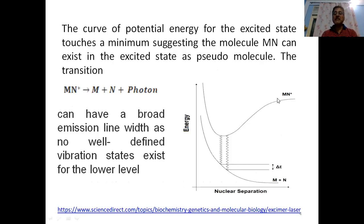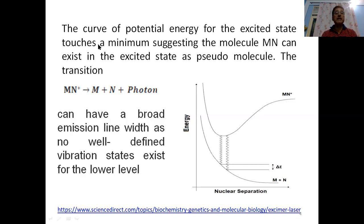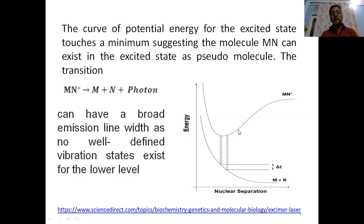From the excited state, MN* dissociates in the ground state to M plus N and a photon — this photon is the laser output. The potential energy curve for the excited state touches a minimum, suggesting the molecule MN can exist as a pseudo-molecule in the excited state. The transition can have a broad emission linewidth, as no well-defined vibrational state levels exist; even the minimum is not sharp, so a broad emission linewidth is obtained.